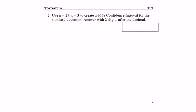This question says n equals 27, s equals 3, to create a 95% confidence interval for the standard deviation. It doesn't say it's normally distributed population, but we'll just have to go with that. So if n is 27, degrees of freedom is 26.